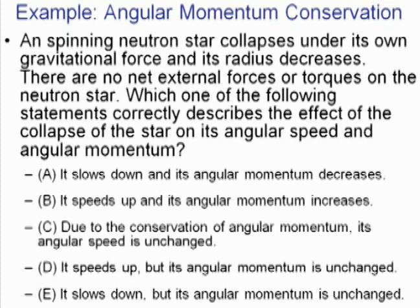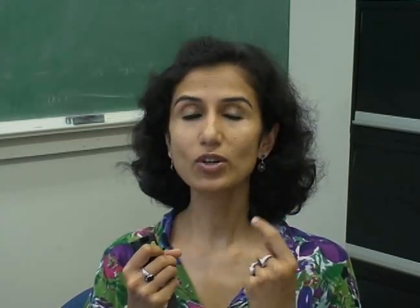Now the same question is asked in another context: a spinning neutron star collapses under its own gravitational force and its radius decreases; there are no external forces or torques on the star. The choices are exactly the same as in the previous case. The question is: are students able to see that, whether it's a spinning skater or a collapsing neutron star, the underlying concept is the same — conservation of angular momentum? Because there are no external torques, these are isolated systems. As the moment of inertia decreases, angular speed must increase. On TV, students can punch in their answers through their mobile phones.